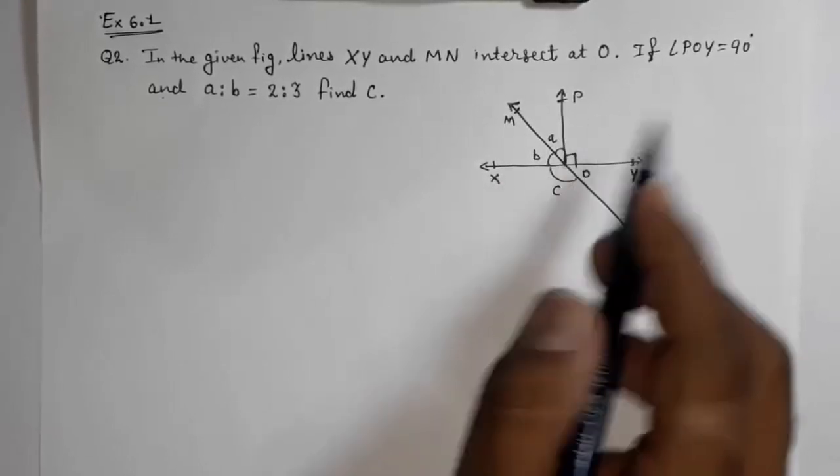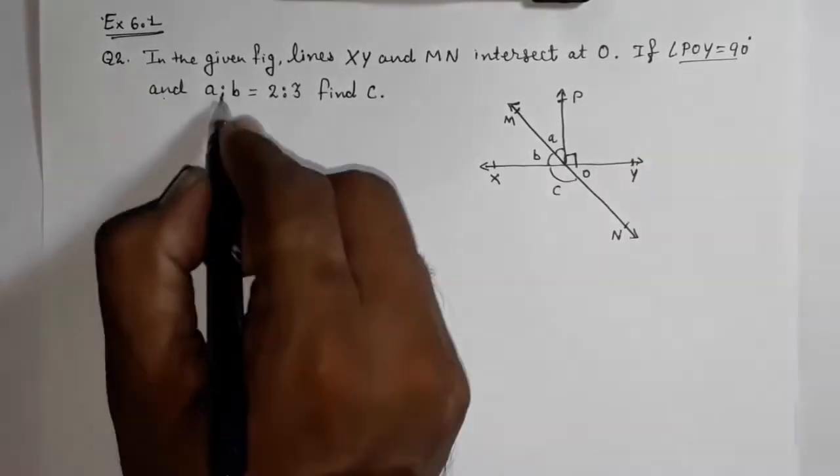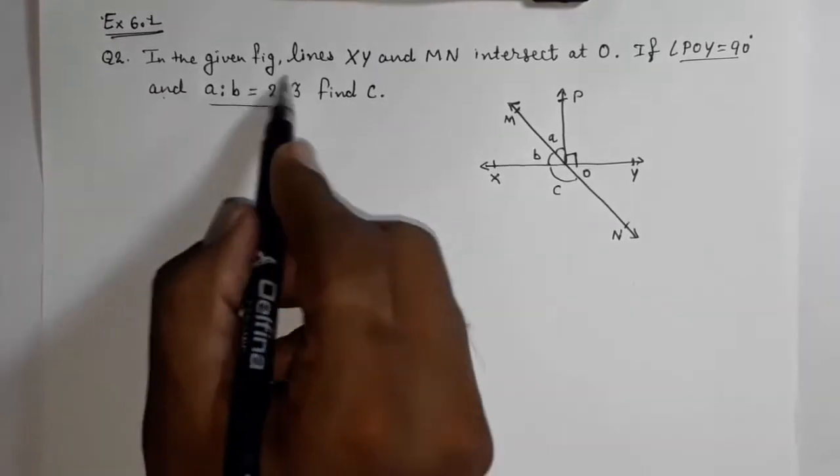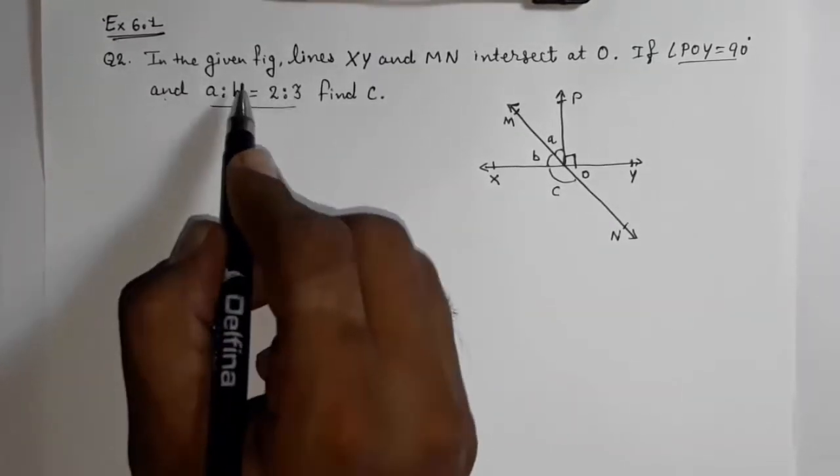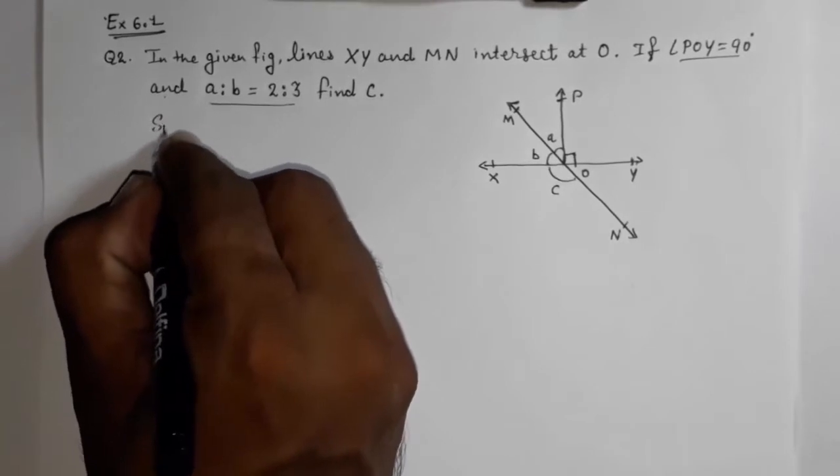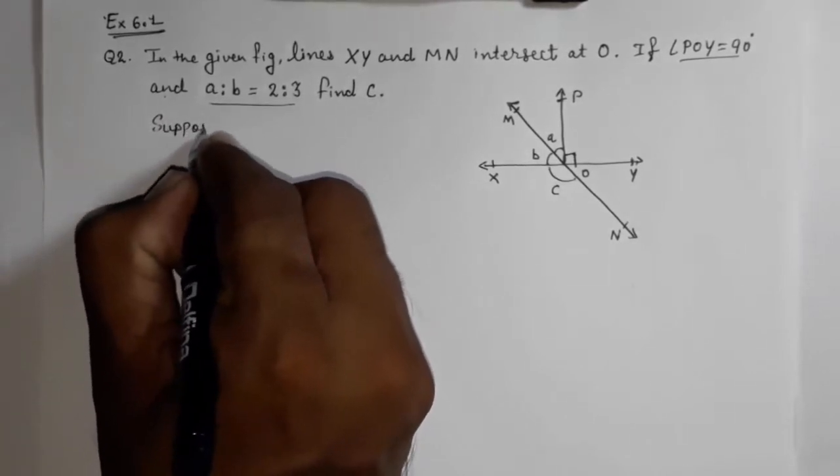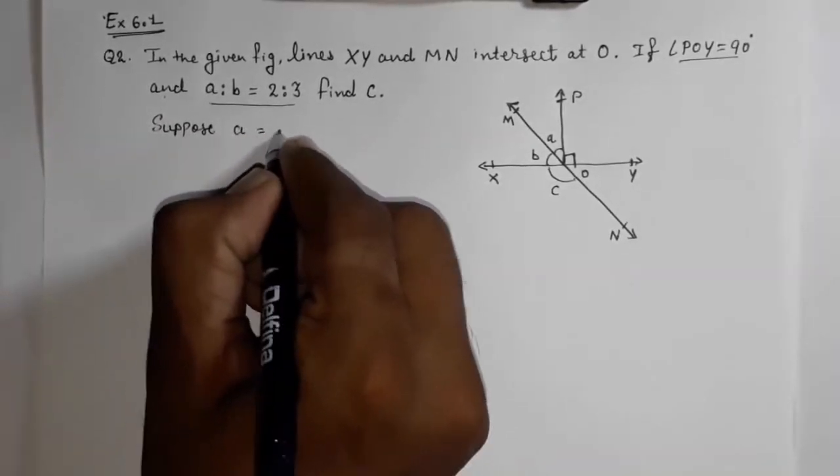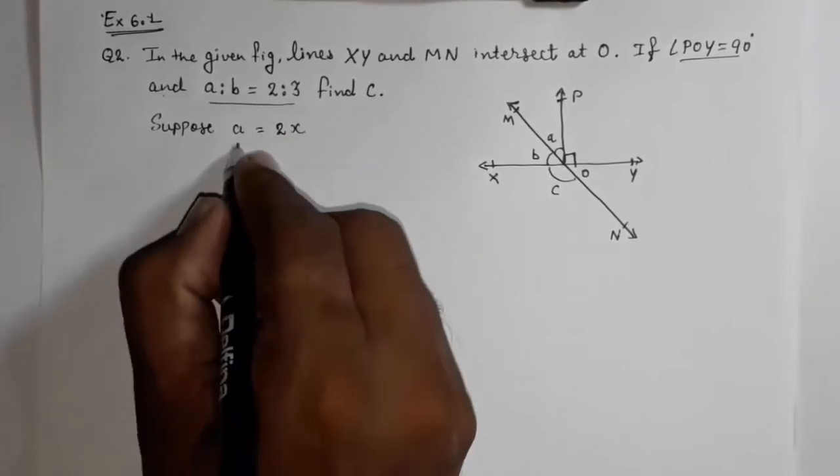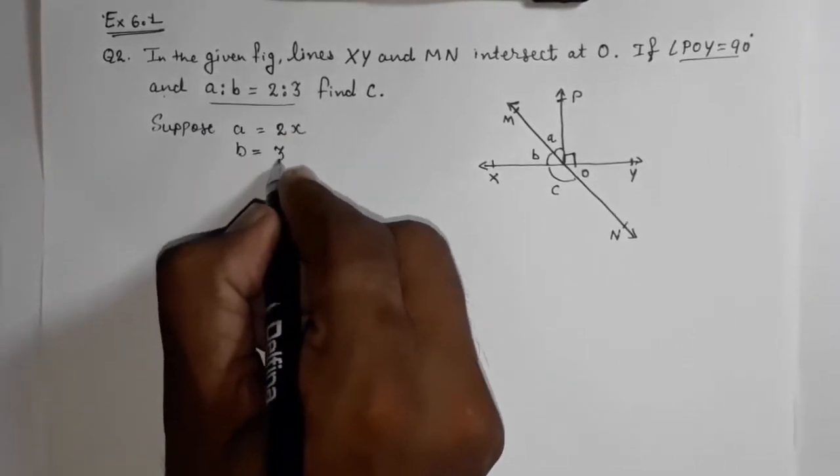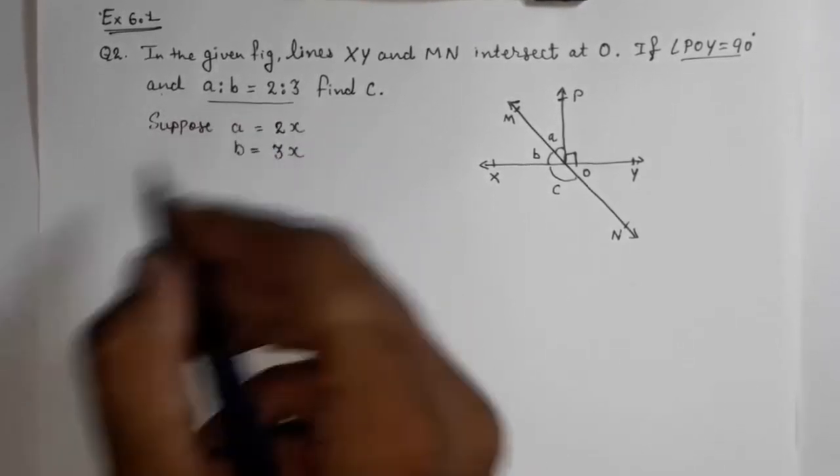They have given us two things: this 90 degrees and this ratio. So whenever anything is given in ratio, first we have to suppose that a is equal to 2x and b is equal to 3x, because it is given in ratio, so we have to remove it from ratio.